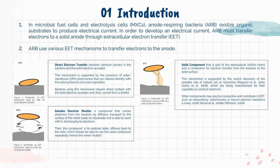The second EET mechanism is the Soluble Electron Shuttle — a compound that carries electrons from the bacteria by diffusive transport to the surface of the metal oxide and is able to react with it, discharging its electrons. Then, this compound, in its oxidized state, diffuses back to the cells, which should be able to use the same compound repeatedly — hence the name Shuttle.